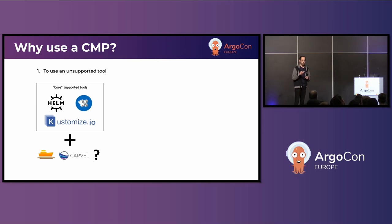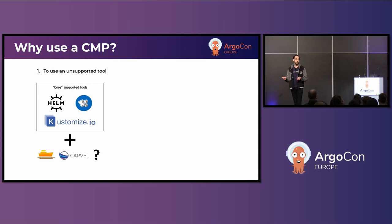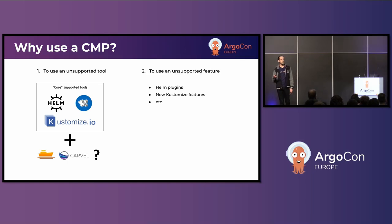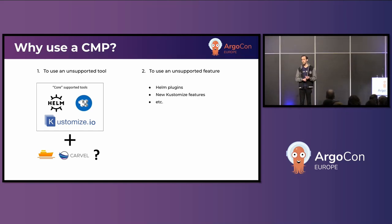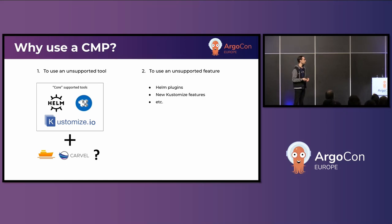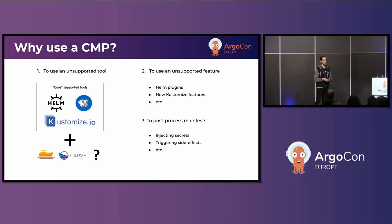Why would anyone want to use a CMP — a Config Management Plugin? The first main reason is to use an unsupported tool. Out of the box, Argo CD lets you use Helm, Kustomize, Jsonnet, or plain manifest files. If you want something like Grafana Tanka or YTT and Carvel, you'd use a plugin for that. Second, maybe a built-in tool doesn't support a feature you need — like Helm plugins or Kustomize 5.0 features not yet integrated. Third, a lot of folks find it useful to do post-processing on manifests, such as injecting secrets or triggering side effects when manifests are rendered.